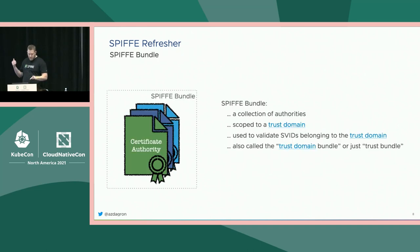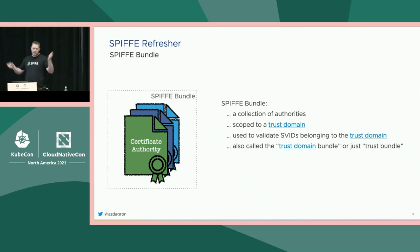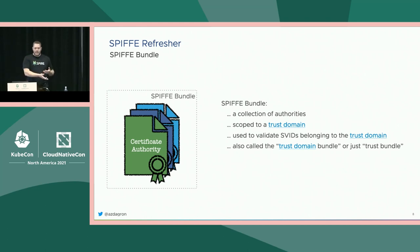Receiving parties take something called the SPIFFE bundle and use this to verify those identities. The SPIFFE bundle is just a collection of the public keys for the signing authorities within a trust domain. We call it a trust bundle or trust domain bundle, but the correct naming in the specification is the SPIFFE bundle. So we've got these signed identity documents and these bundles we can use to verify them.